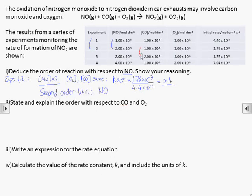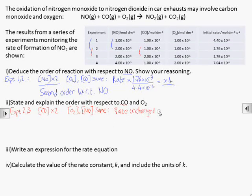Comparing the second and third experiments, only the concentration of CO has changed. Doubling the concentration of CO has no effect on the rate, so the reaction is zero order with respect to CO.